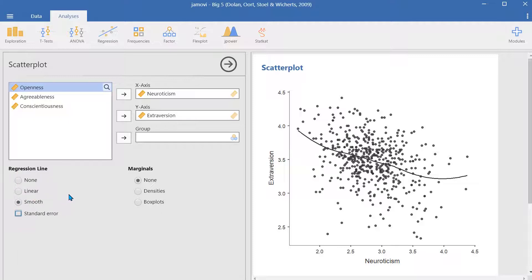One feature that Jamovi provides is the standard error. We can enable it here under the smooth option, and we can notice that the standard error is higher at the ends and lower in the middle.